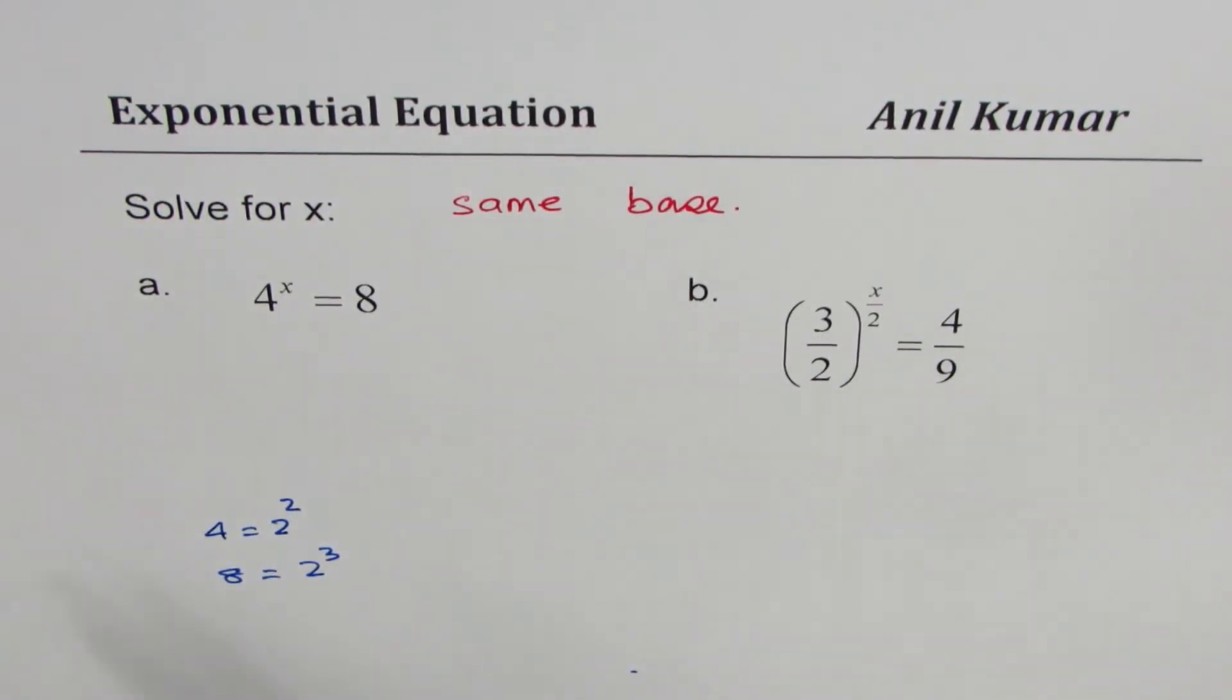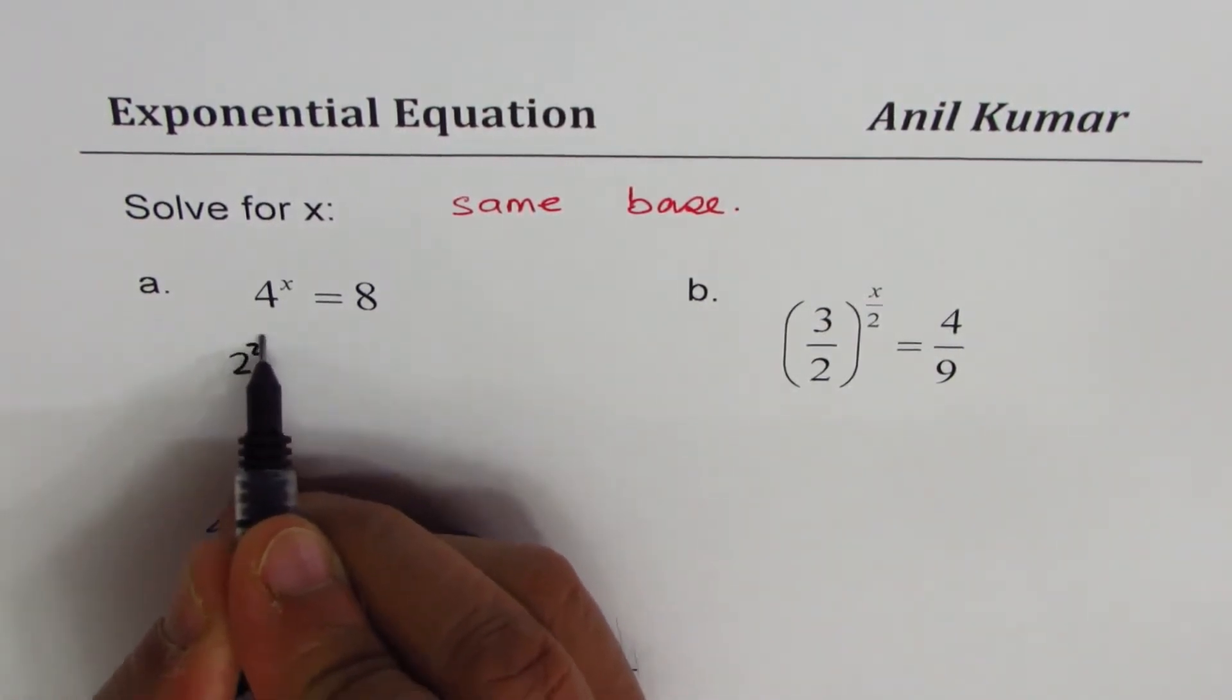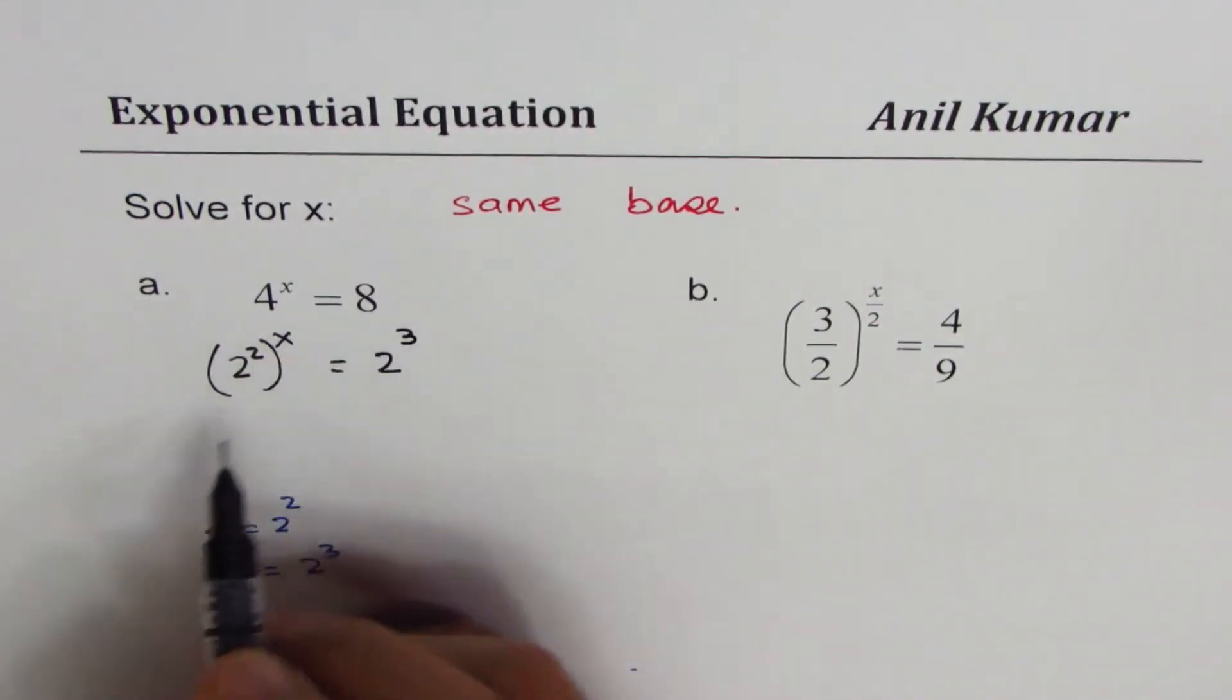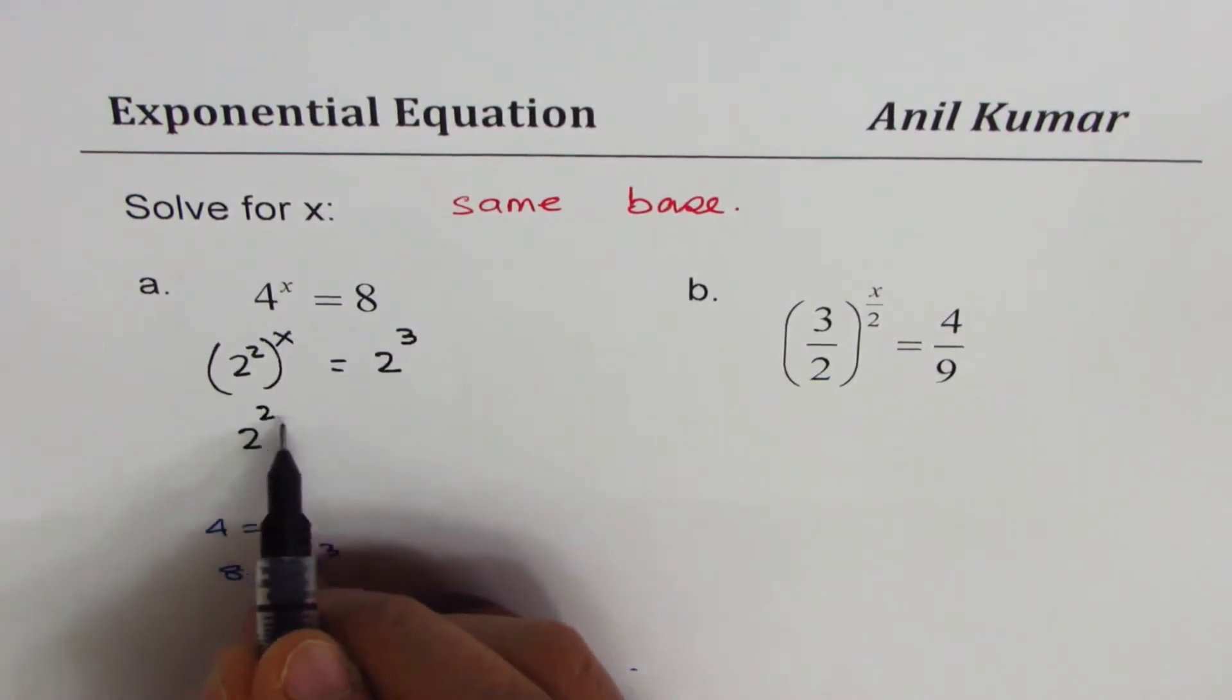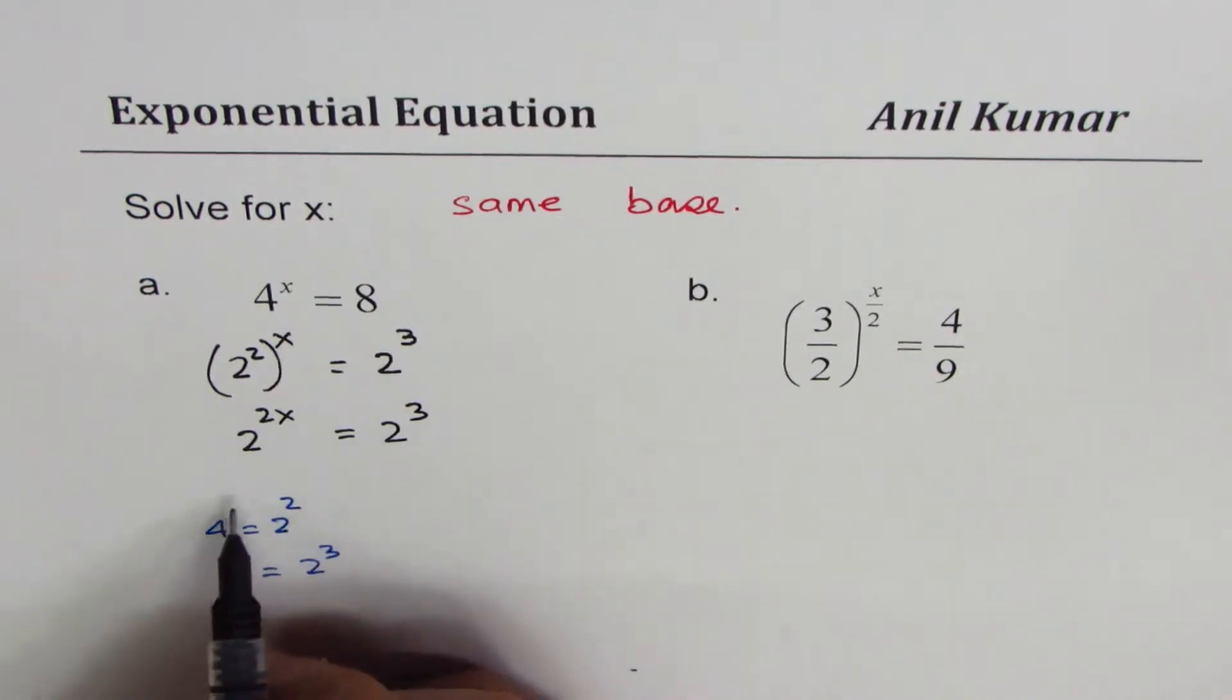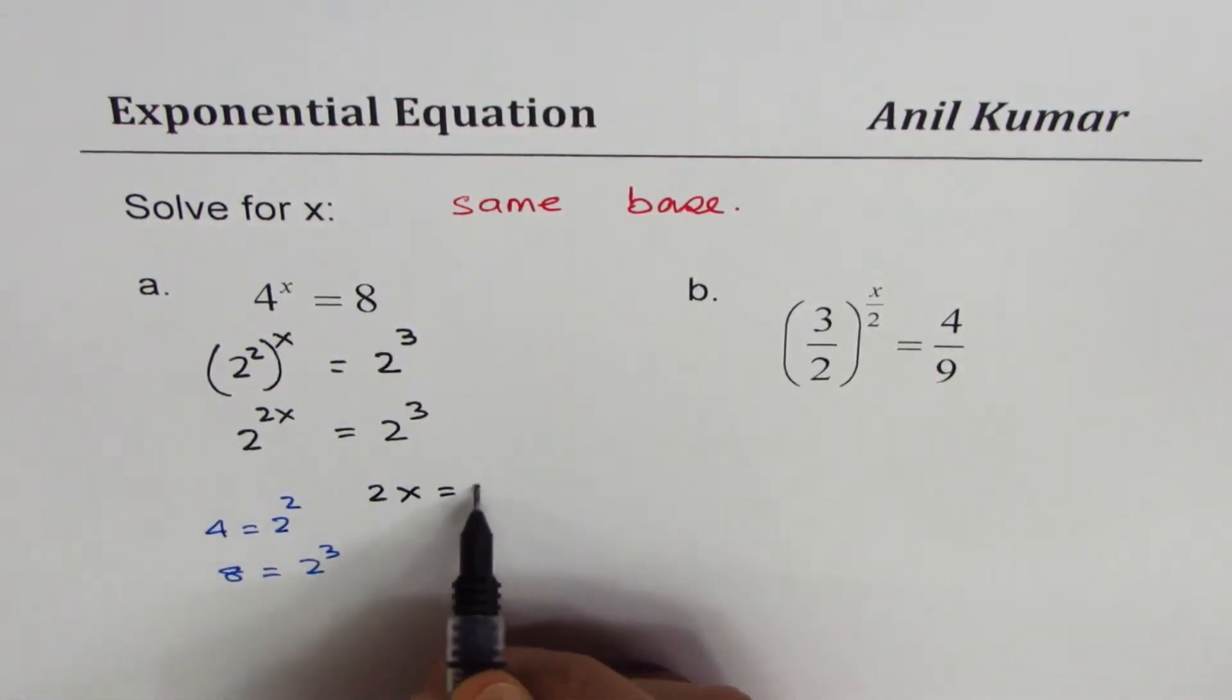So let's replace 4 with 2^2. What do you get? You get (2^2)^x, and here for 8 we get 2^3. So that becomes 2^(2x) = 2^3. Since the base is the same, we get the equation 2x = 3, or x = 3/2.